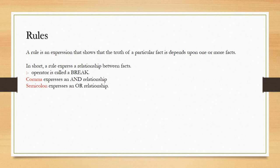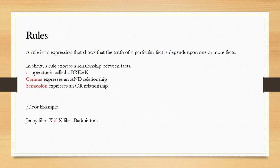Now let's move on to rules. A rule is an expression that shows the truth of particular factors depending on one or more facts. The rule is a relationship between facts — if two or more facts are true, then only the rule is true. Three things to keep in mind: the colon-dash operator is called the neck or rule sign, comma represents an AND relationship, and semicolon represents an OR relationship.